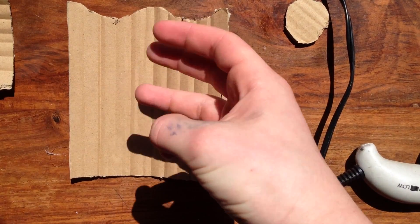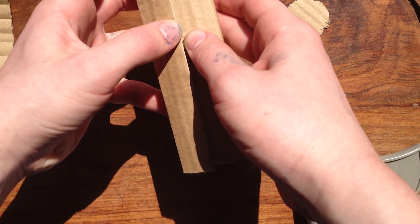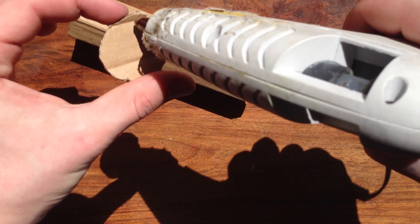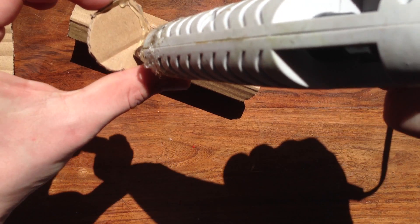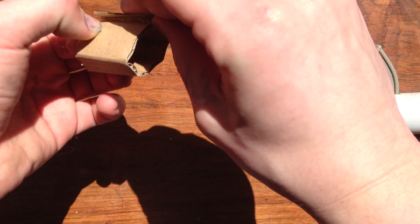At this point, you should have three pieces left. Take the piece with the curved edges and glue the two sides together. Next, take the smallest circle and glue it to the end of the tube you just glued. Finally, take the last piece and glue the two ends together.